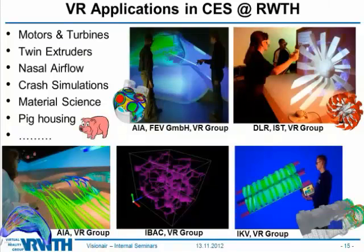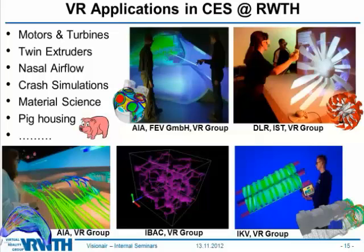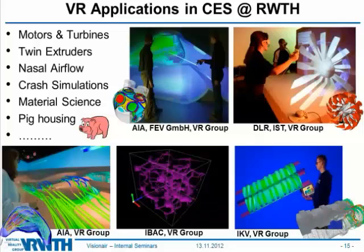For concrete applications, a lot revolves around flow phenomena. We simulate motors and turbines, but also extruders — for example, analyzing how plastic flows through an extruder to optimize the process. We also had a project on nasal airflow in the nasal cavity, analyzing how to optimize the flow through the nose before performing an actual operation. Additionally, we do crash simulations and material science work, and an interesting project on pig housing to optimize airflow and building construction.